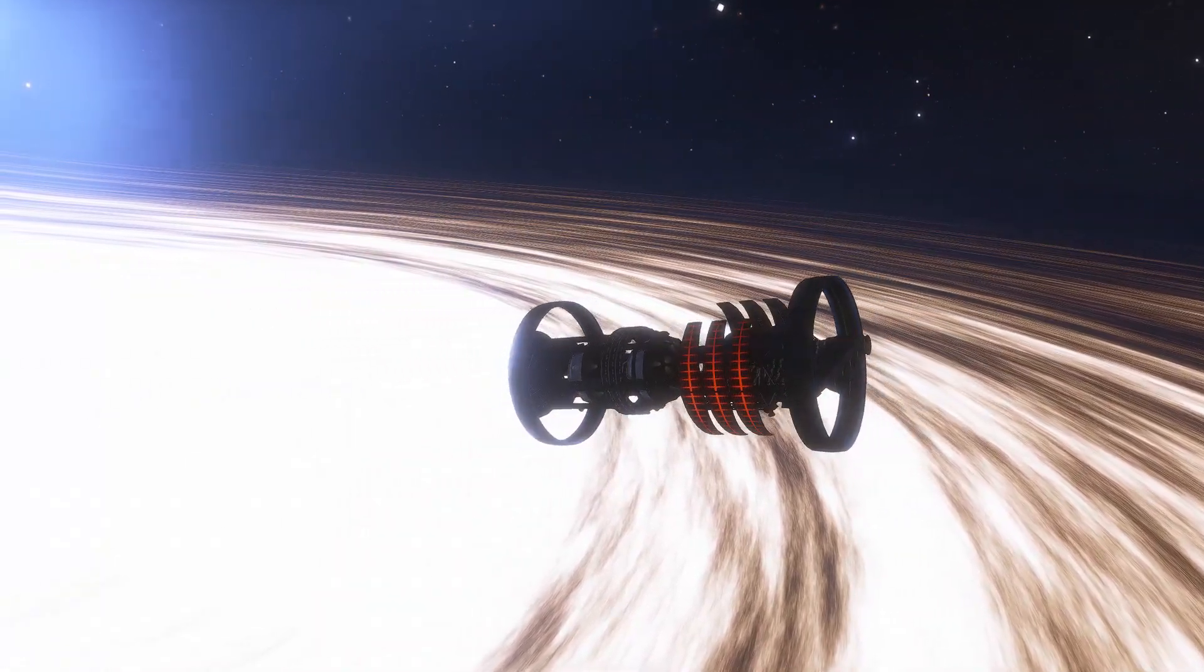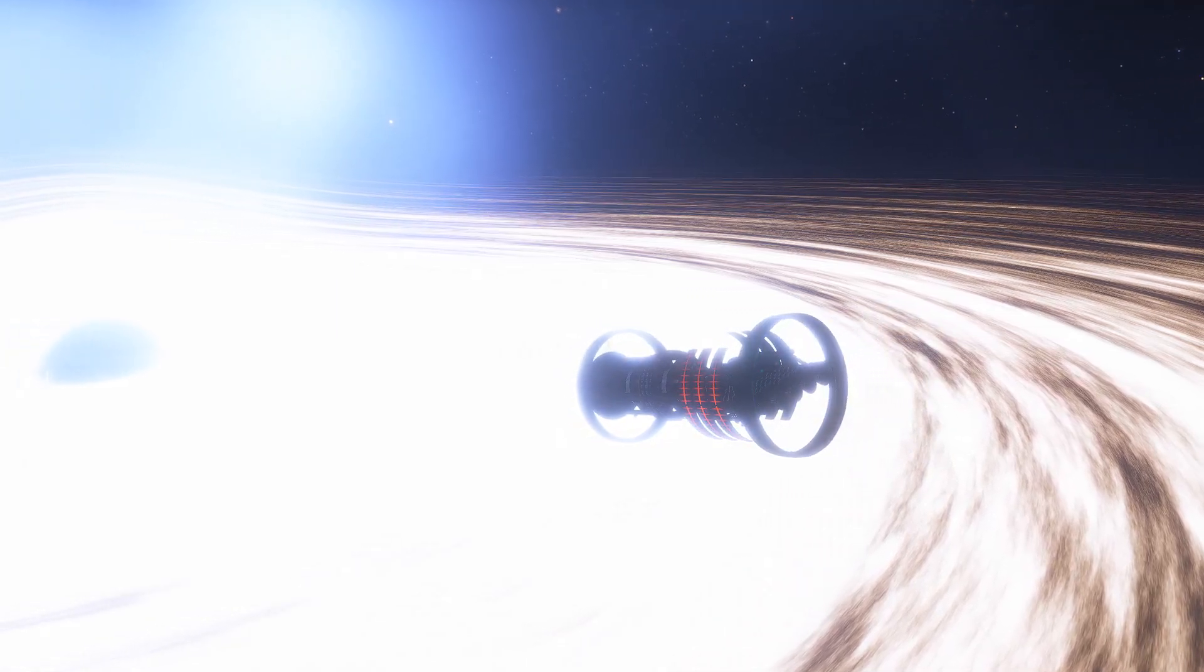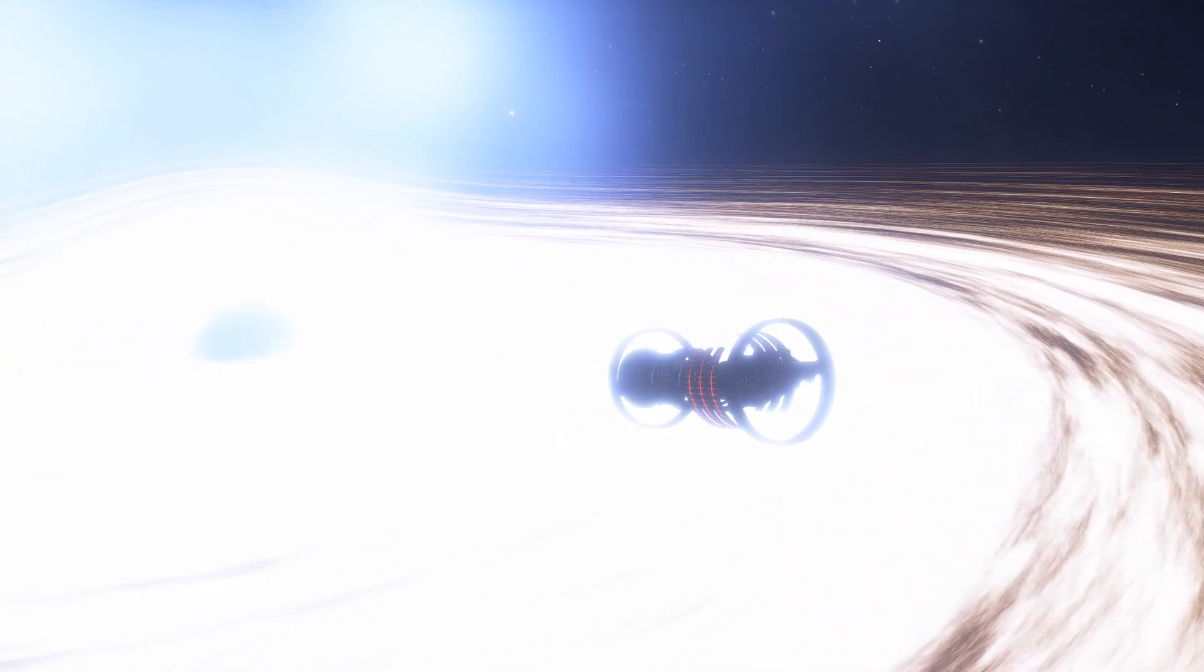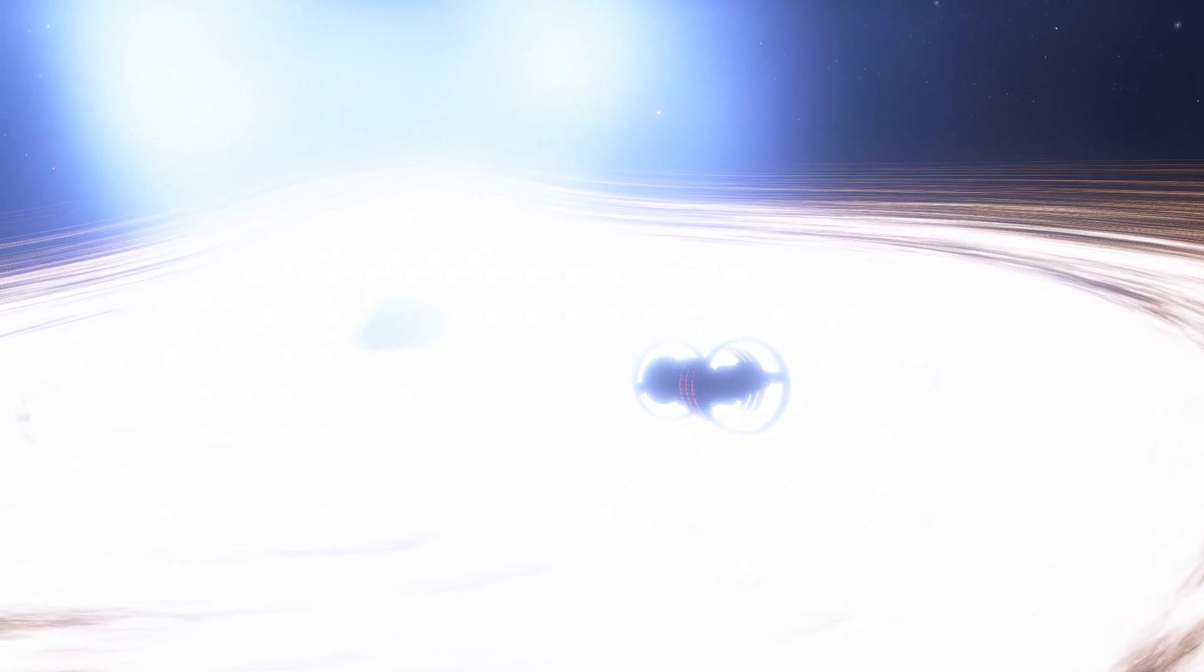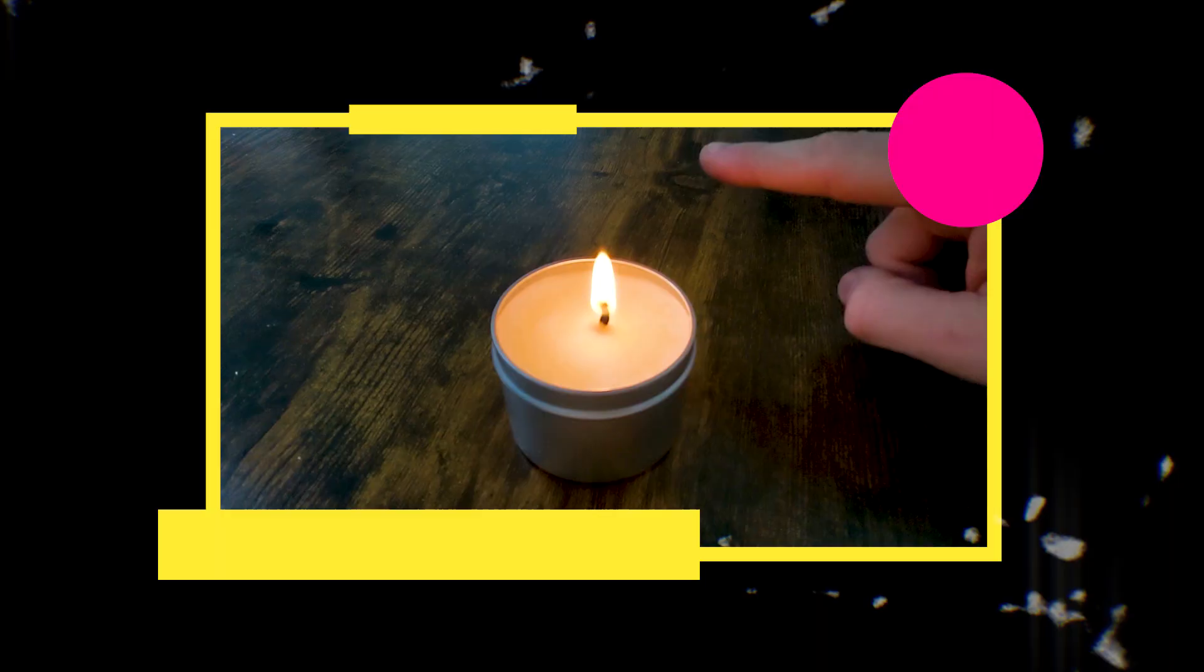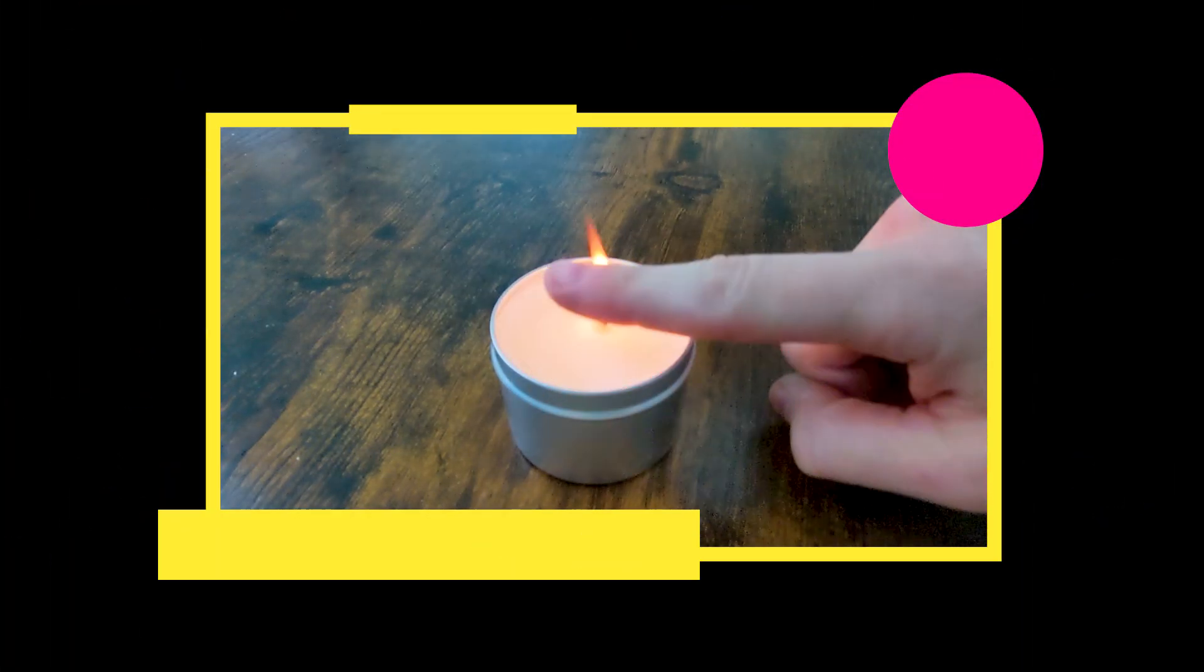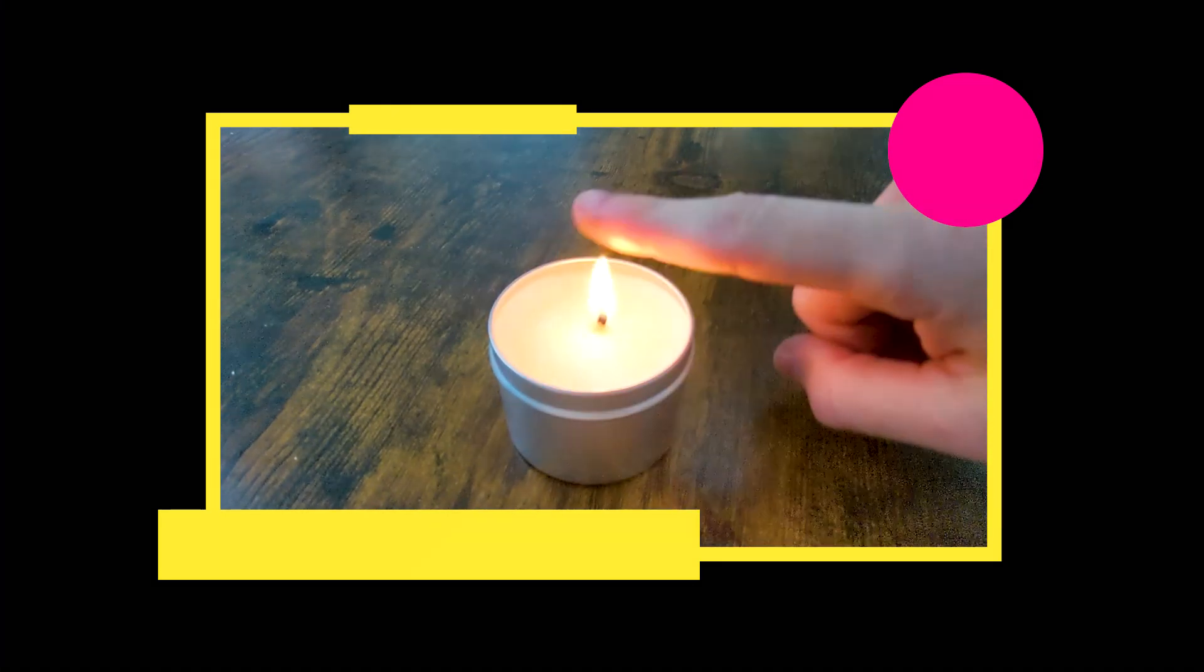The reason that this is possible is that the relevant singularity inside a rotating black hole is technically weak and thus does not damage objects that interact with it. At first, this may seem counterintuitive, but one can think of it as analogous to the common experience of quickly passing one's finger through a candle's near 2,000 degree flame without getting burned.